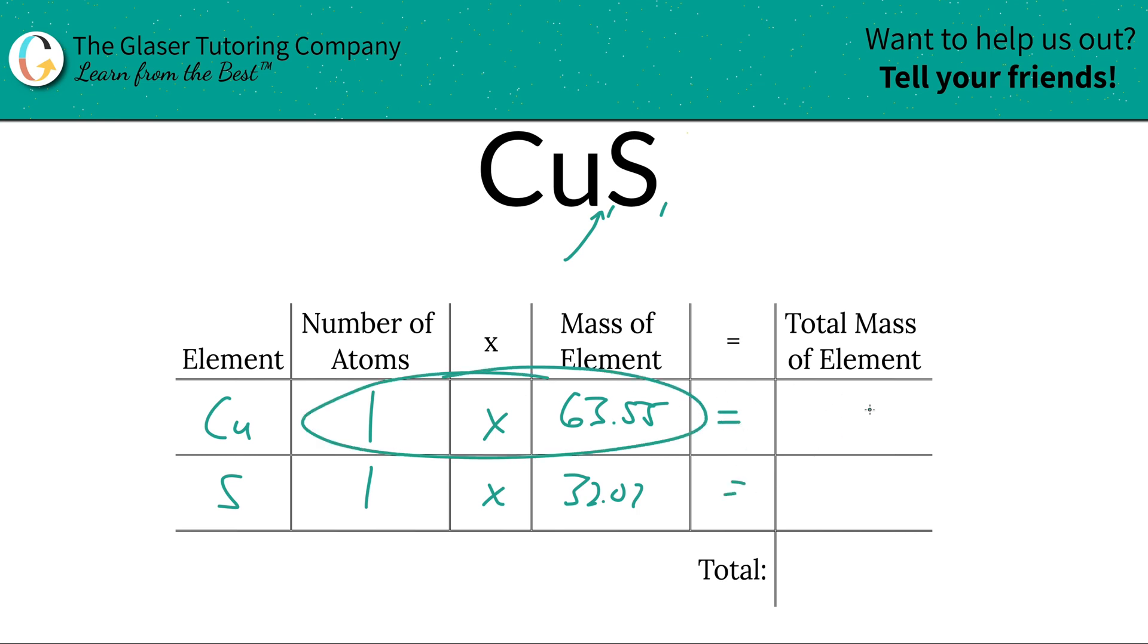And then we're simply going to multiply this row across to find the total mass of that particular element. So the total mass of copper here is simply going to be 63.55 units of mass, and then sulfur is going to be 32.07.